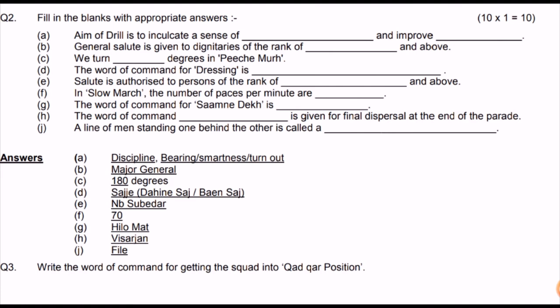The word of command for Samne Dekh is 'Hill Mat.' The word of command for final dispersal of the parade is 'Visarjan,' and for the break in between it is 'Line Toad.' A line of men standing one behind another is called a file — also called a rank file. Rank and file are the same thing.